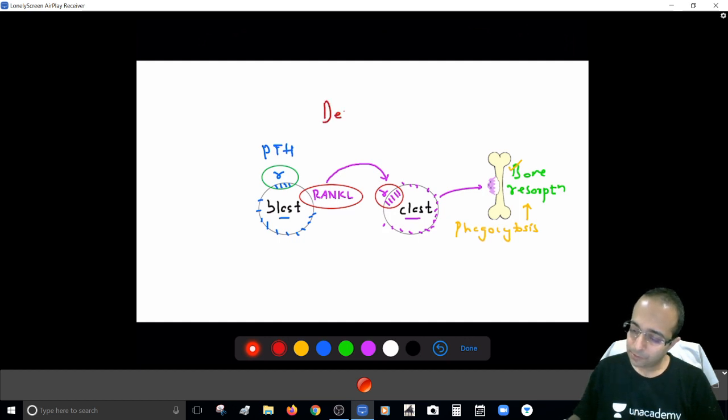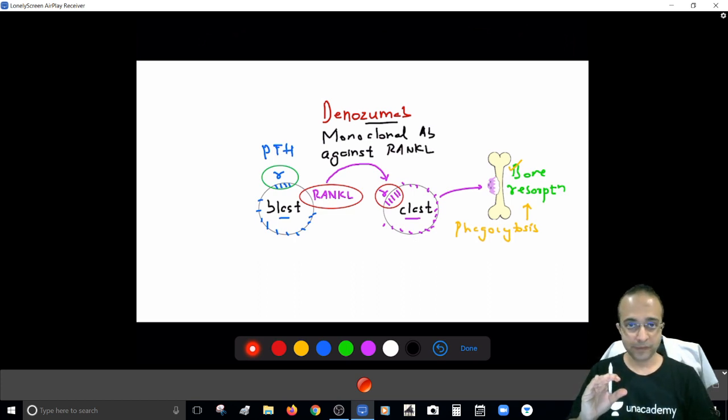The first one, Denosumab. So Zumab, I think, tells you this is a monoclonal antibody. Denosumab is a monoclonal antibody and this is specifically being made to target the RANKL proteins. I hope that makes sense to you, because if you will give Denosumab, it will block this particular step because it is going to eliminate RANKL.